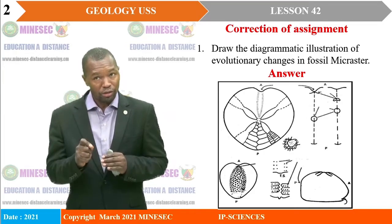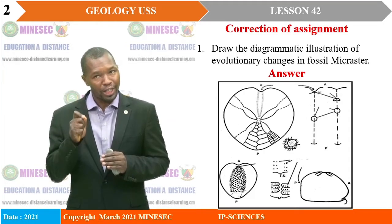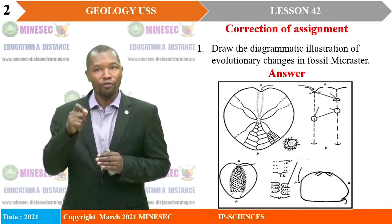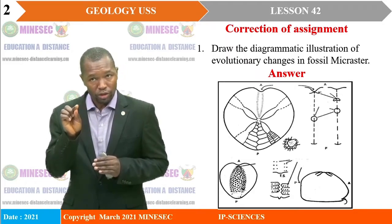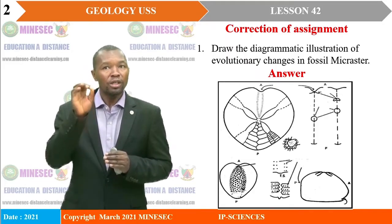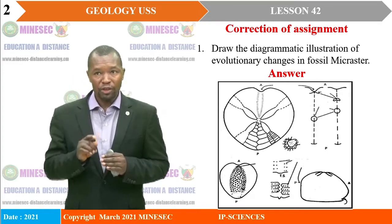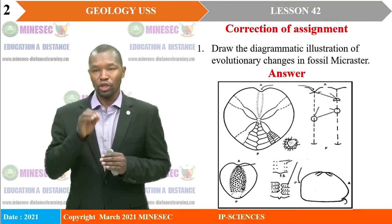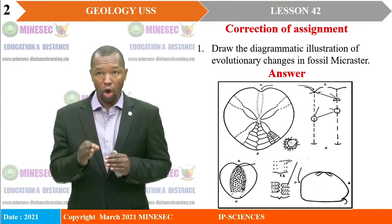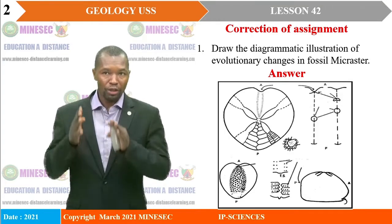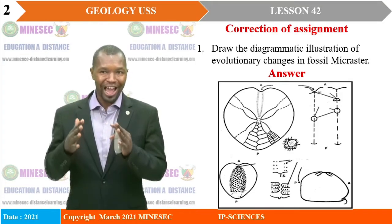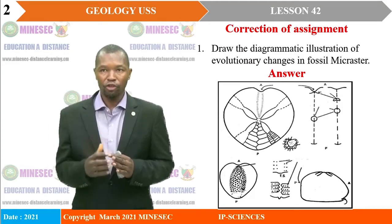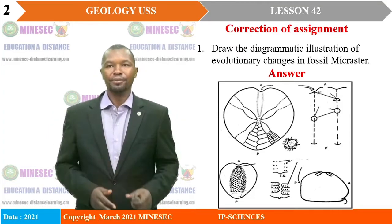Remember that the question simply expected that you should draw the diagrammatic illustration of evolutionary changes. Take note that you were to draw. If you look at the diagram, you will not see any labels there. Emphasis was on the diagram, the drawing position, and the different aspects involved in the evolutionary trend for the fossil microcosystems.